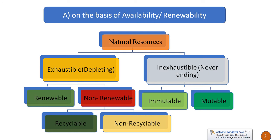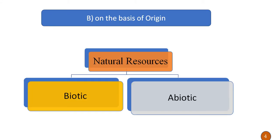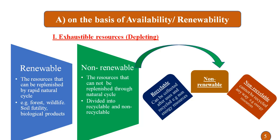This is just an overview of the classification; we will see the details later. The second criteria is on the basis of origin. Natural resources are categorized as biotic natural resources and abiotic natural resources. These are the two major criteria on which natural resources are divided.